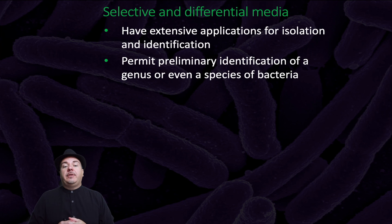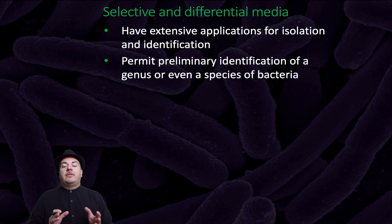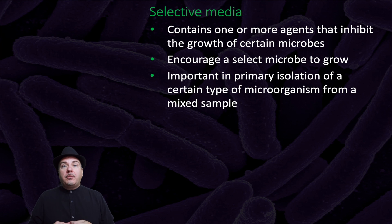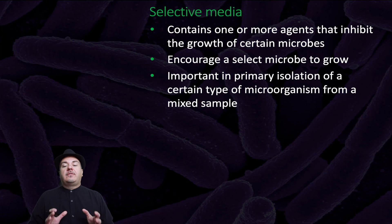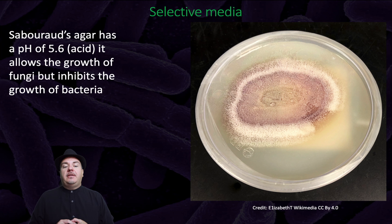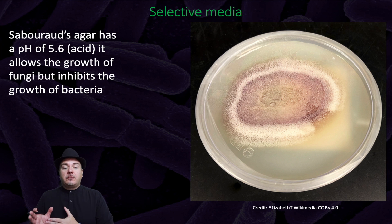We also have selective and differential media, which have extensive applications for isolation and identification, and permit preliminary identification of a genus or even species of bacteria. Selective media contains one or more agents that inhibit the growth of certain microbes, while encouraging a select microbe to grow. They are important in the primary isolation of a certain type of microorganism from a mixed sample. For example, this agar has a pH of 5.6, so it's acidic, which allows the growth of fungi but inhibits the growth of bacteria.